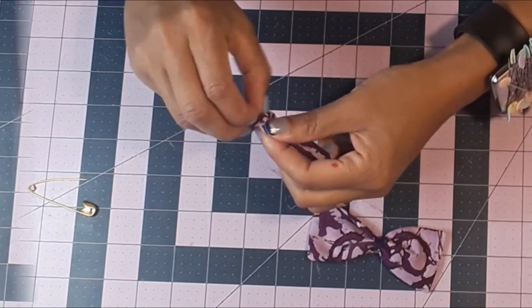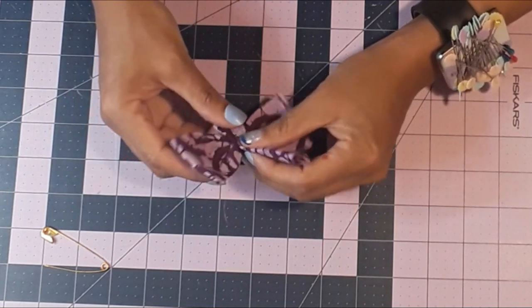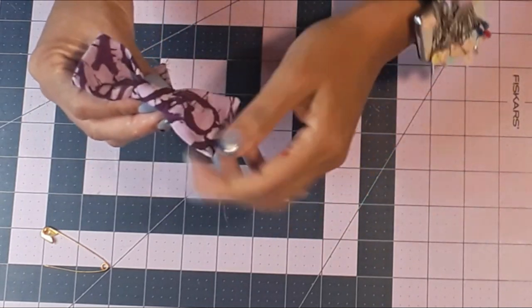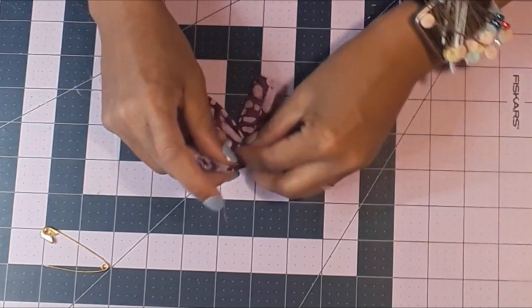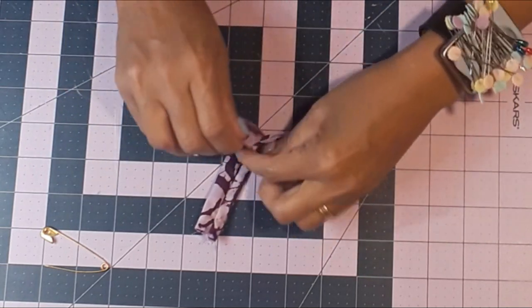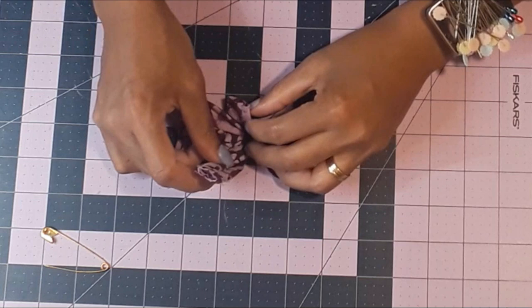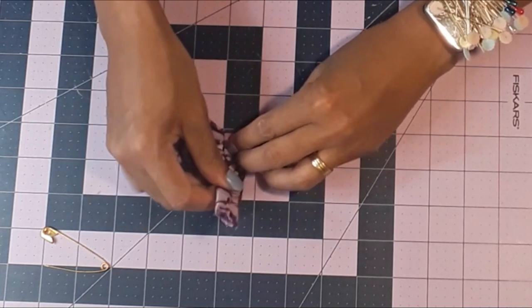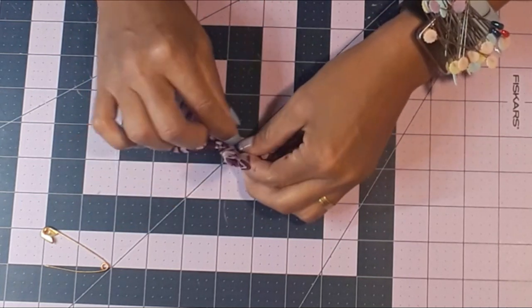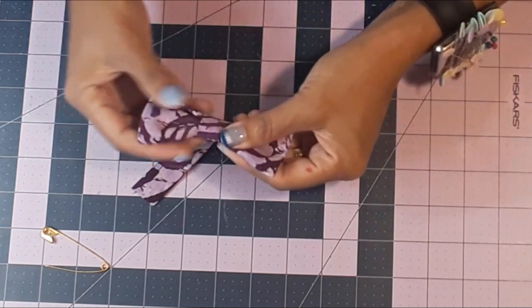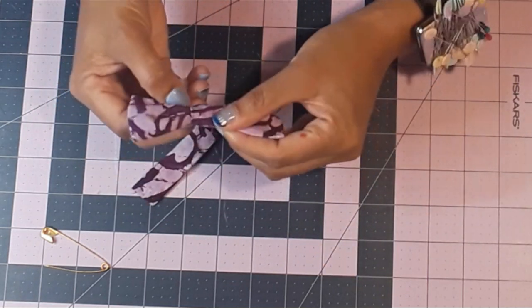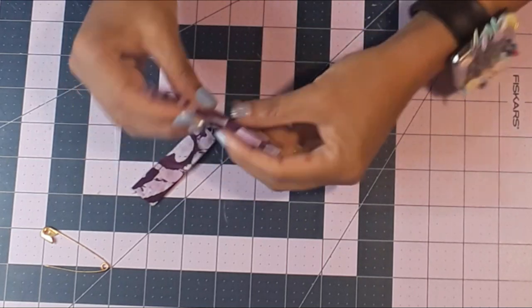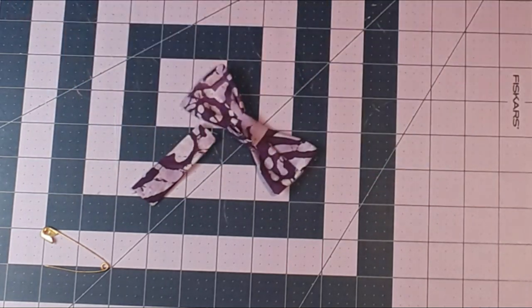You can give it a good press. This part is a little bit longer than it should, but it's always good to have it longer rather than shorter. I'm going to cut the extra part. You can do this by sewing machine, but I decided to do it with hand sewing.